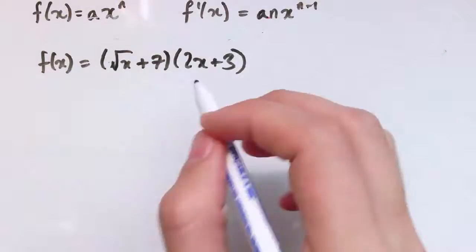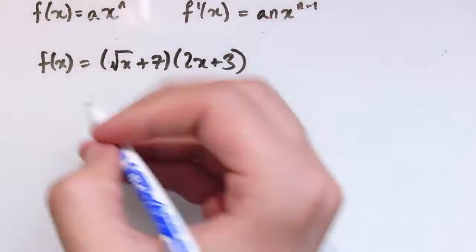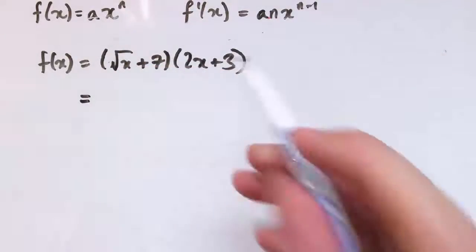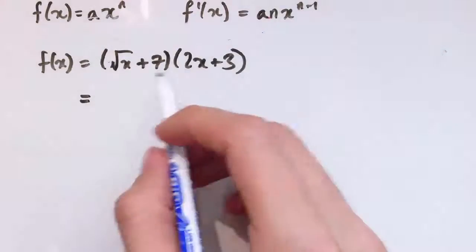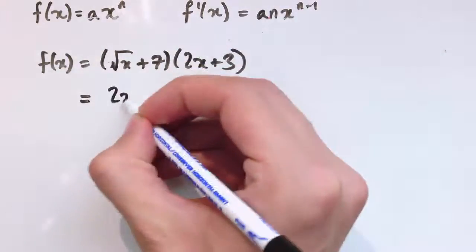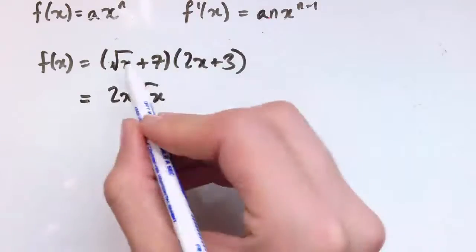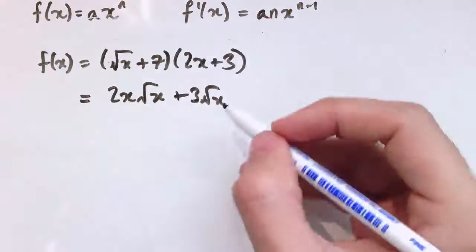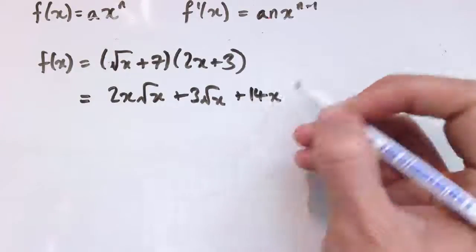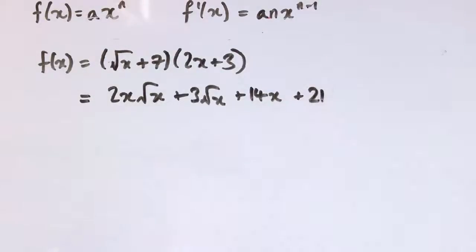So this is kind of the same idea, but different and a little bit harder with the indices. So I've got (√x + 7)(2x + 3). As in the first example, we're going to need to multiply this all out. So 2x times root x, and we'll have 3 times root x, and we'll have 2x times 7, which is 14x, and we'll have 21.